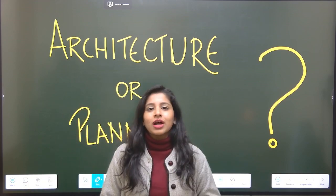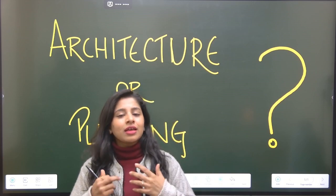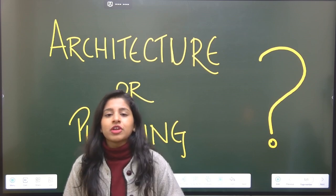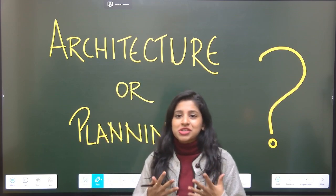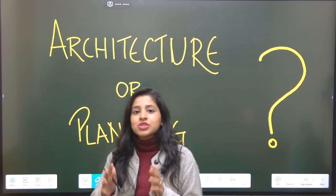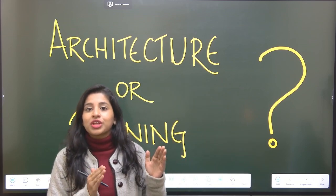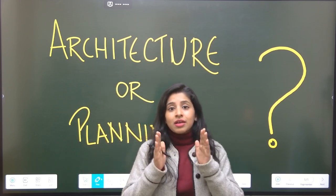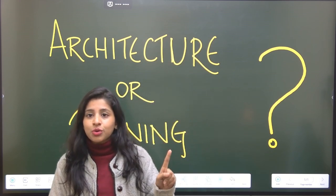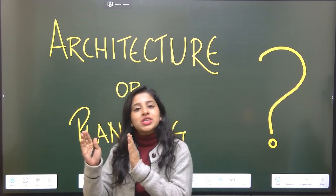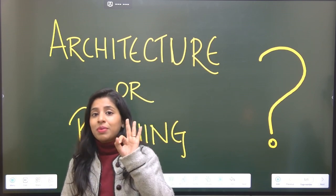Now, before that, the first thing you have to understand—and I think a lot of you may or may not be aware of it—let's try to understand what this architecture and planning section is all about. The new pattern of GATE examination is that initially you had the general aptitude and the core subject part, but now the core subject is further divided into three parts.